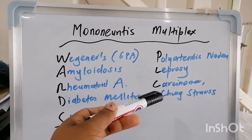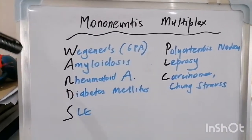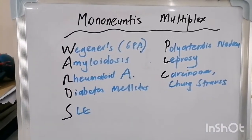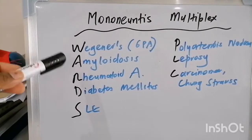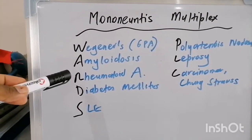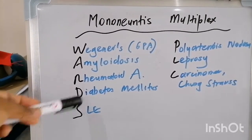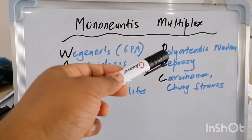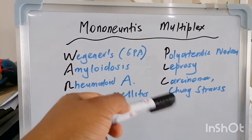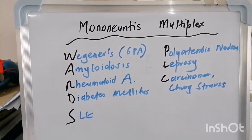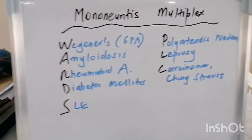C stands for carcinoma, or it could be Churg-Strauss syndrome, which is now called eosinophilic GPA. Quick recap — causes of mononeuritis multiplex: Wegener's (granulomatosis with polyangiitis), amyloidosis, rheumatoid arthritis, diabetes mellitus, SLE, polyarteritis nodosa, leprosy, and carcinoma or Churg-Strauss.